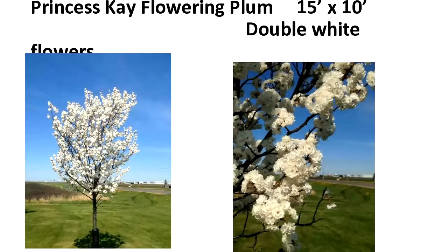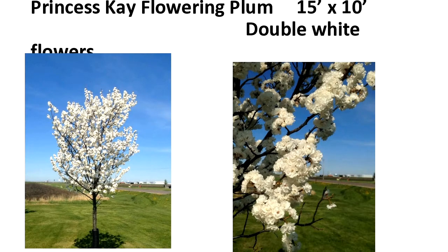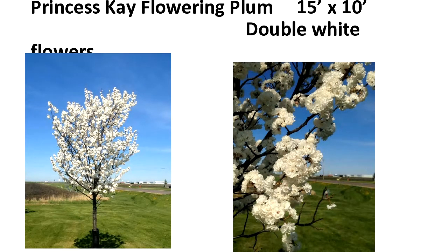One of the earliest to bloom — visible in early May as you drive around — is Princess Kay flowering plum. If you see one in bloom and go up to it, the flowers are really amazing — doubled, very dense, almost like they're in a bouquet. This is Prunus nigra, a plum native to Canada, so it's a Zone 2 flowering plum and very hardy for our area. I don't like them planted out in an open area, but if you plant it in a more intimate setting near an entryway or patio, that early spring bloom is just really fantastic.